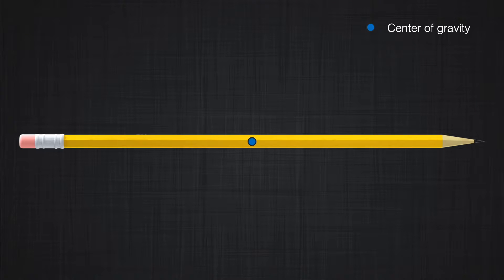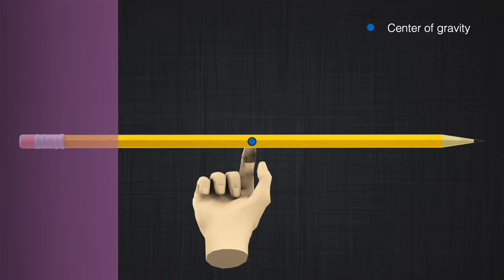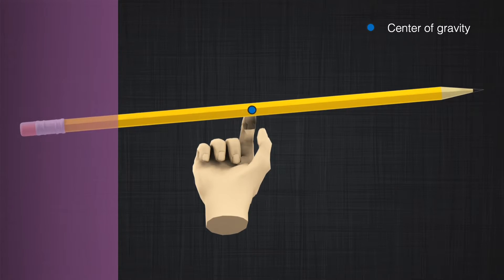What happens if the object is not free and is restrained from one side? Assume the pencil we were talking about has been restrained on one side in a soft material, for example wax, and you are trying to move this pencil in the wax. If you put your finger under the center of gravity of this pencil — the same experiment as before — you will notice a difference. Application of the same force on the center of gravity would not allow the pencil to move upward easily without tilting; the pencil starts to tilt.